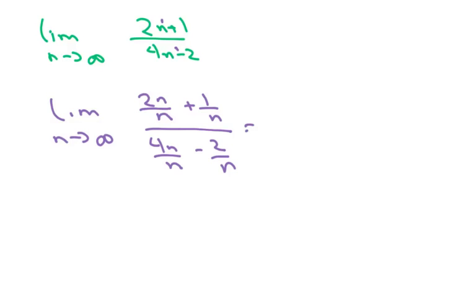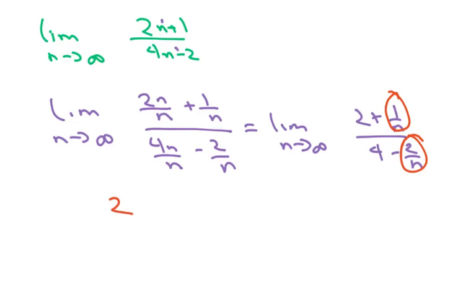And that's going to yield the limit as n approaches infinity over 2 plus 1 over n over 4 minus 2 over n. And, you know, with the limits, when you take the limit of these two, that goes to 0. So we're going to get 2 over 4, which equals 1 half.